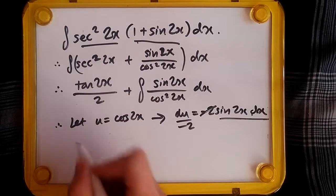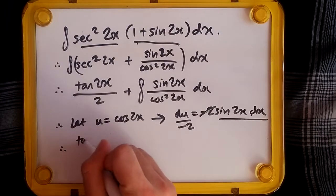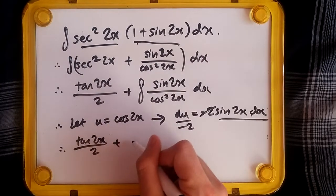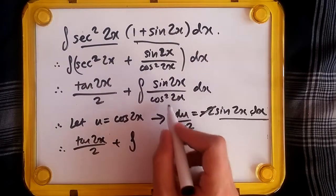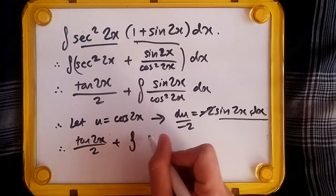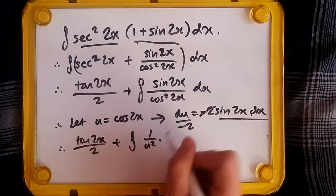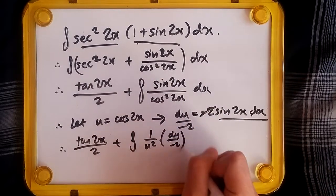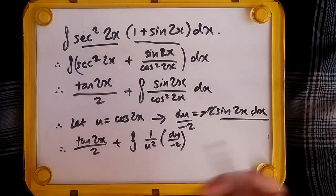of 1 over cos²(2x)—which gives us 1 over u²—and sin(2x) dx gives us du over -2. This part is easy to integrate. Working on this side only, we get -1/2 outside, times 1 over u².